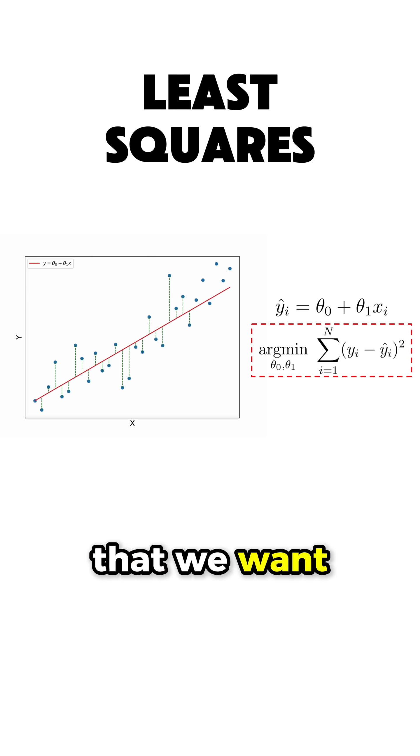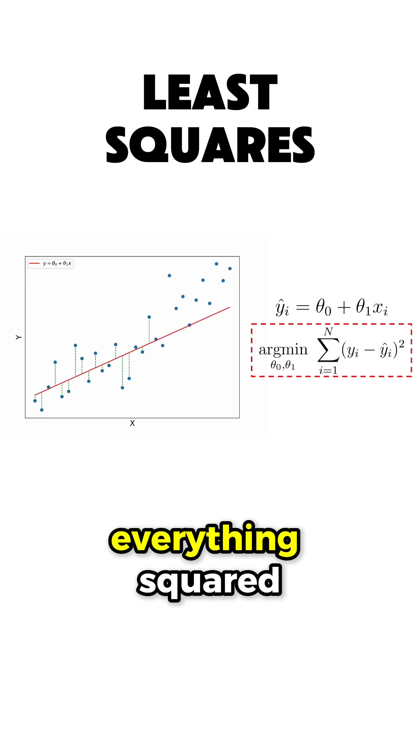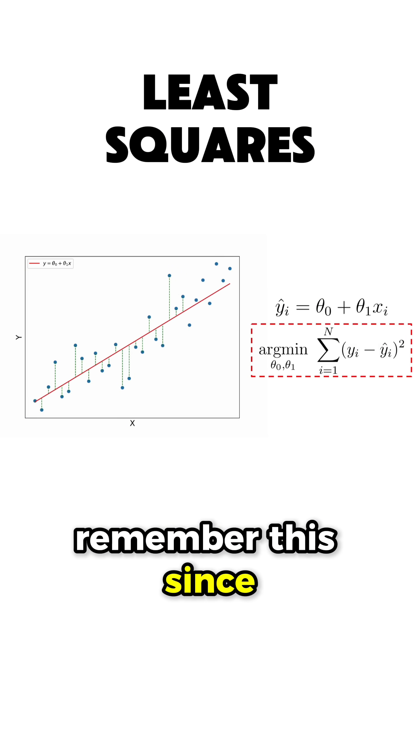So we have that we want to minimize the following: Sum from i equals 1 to n of yi minus y hat i, which is theta0 plus theta1 xi, everything squared. Remember this since we'll need it later.